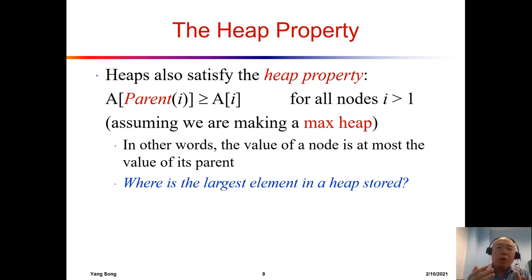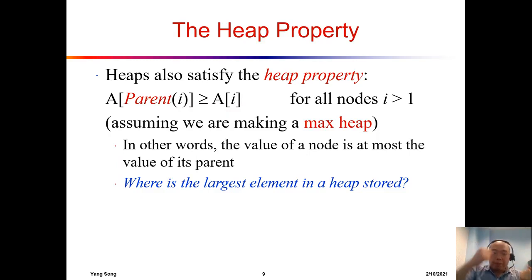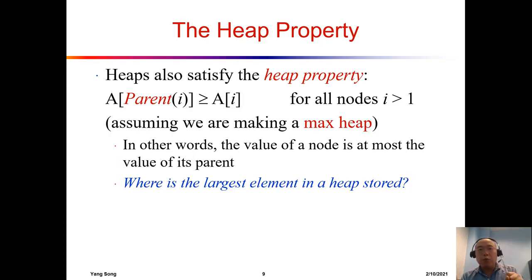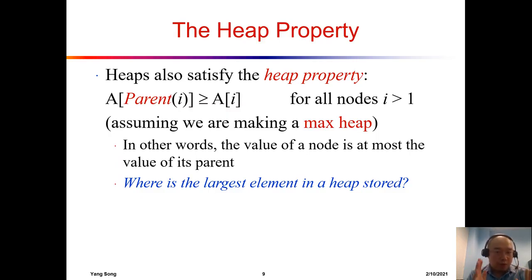Another property of the heap is we want to enforce a rule: for each parent-child pair, the parent is always greater than or equal to the value of the child. This rule should hold for all parent-child pairs, and then we have a max heap. In this book, we only talk about the max heap. Of course, if you reverse the rule — the parent is always smaller or equal to the child — then you have a min heap. But in this lecture, we only talk about the max heap.